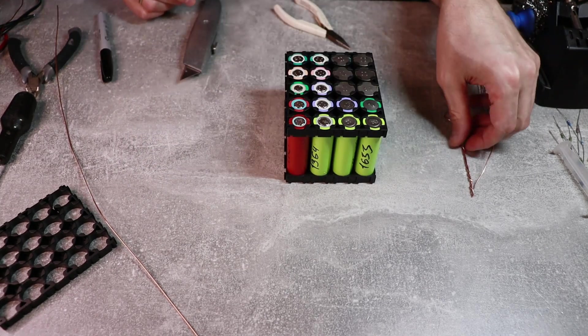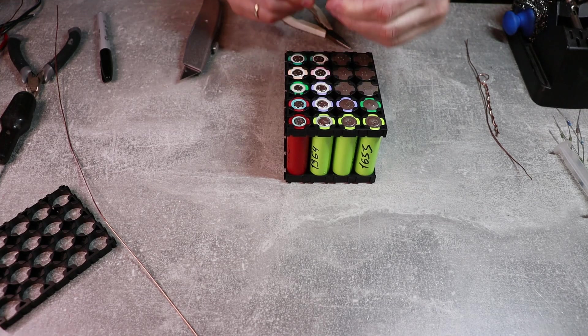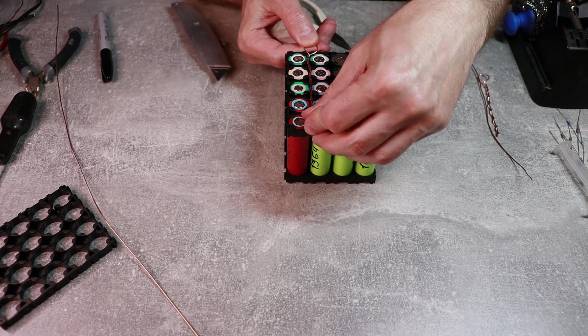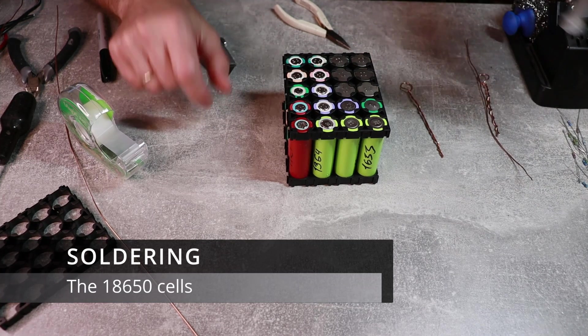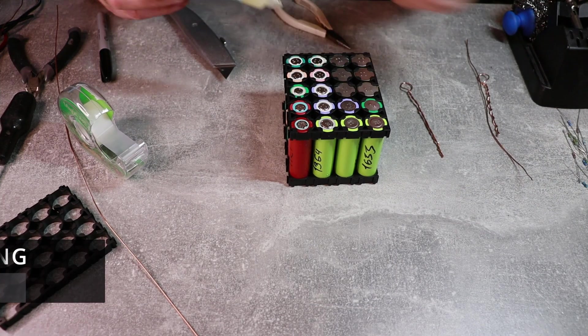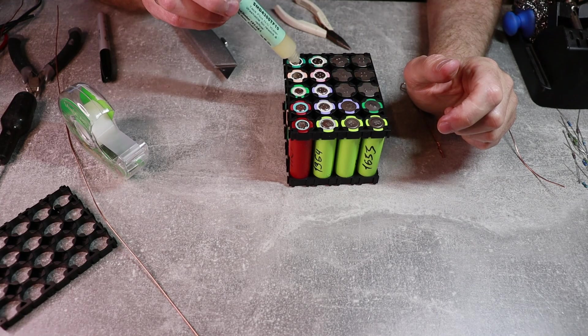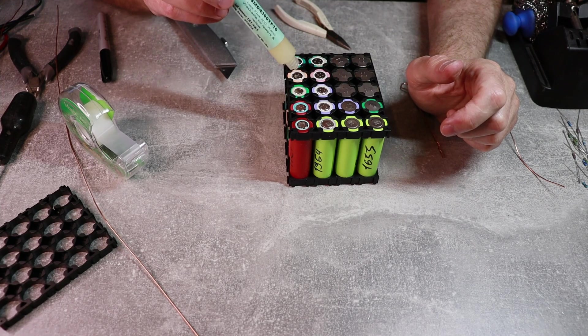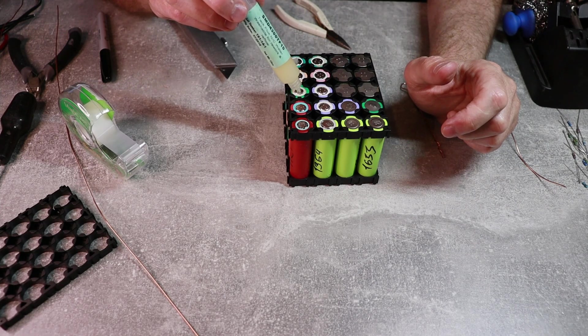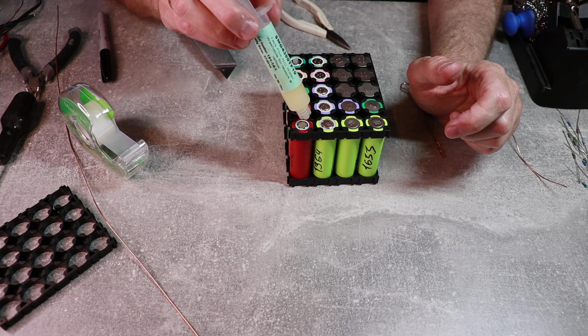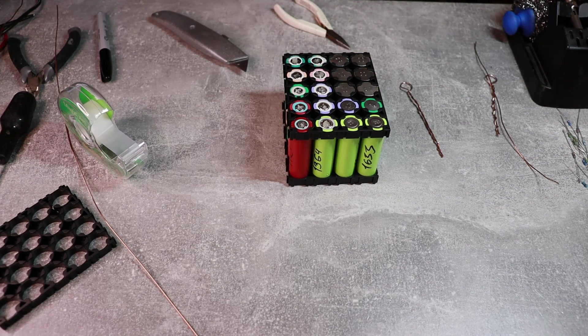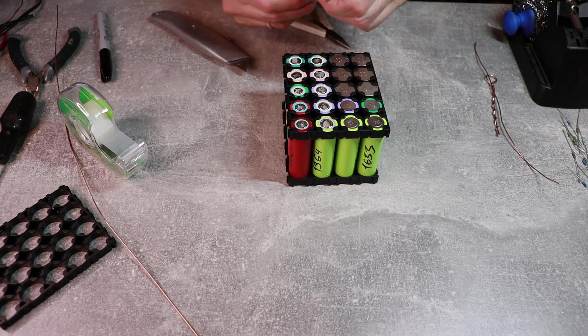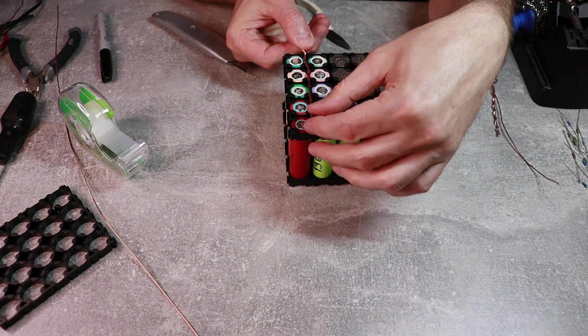This will be our top and one of the bus bars will go here. What I will want to do first is I want to put a bit of flux on each cell so it would be easier for me to solder it. And after that I can put my improvised bus bar.